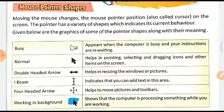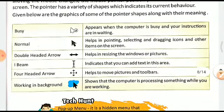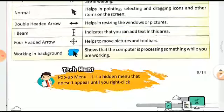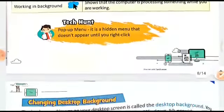'Normal' — the black arrow helps in pointing, selecting, and dragging icons. The double-headed arrow helps in resizing the window. The I-beam indicates that you can add text in that area. The four-headed arrow helps to move pictures and toolbars. 'Working in the background' — a cloud and an arrow show that the computer is processing something while you are working.